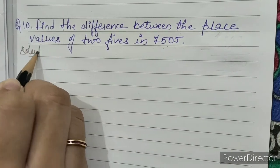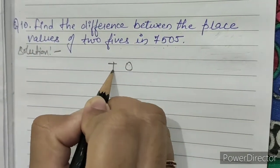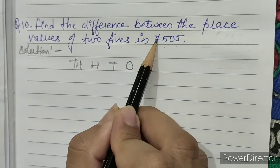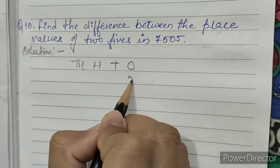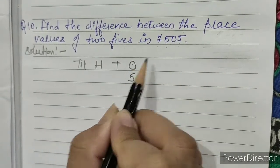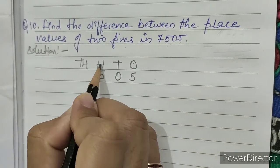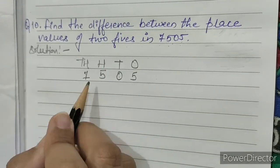Solution. Ones, tens, hundreds, thousands. So 7,5,0,5. We will write it as 5 is at ones place, 0 is at tens place, 5 is at hundreds place, and 7 is at thousands place.